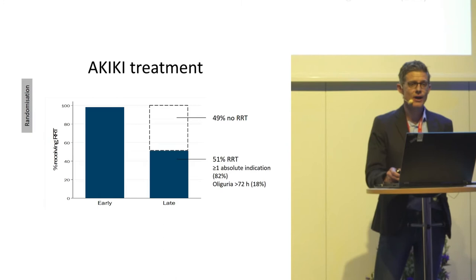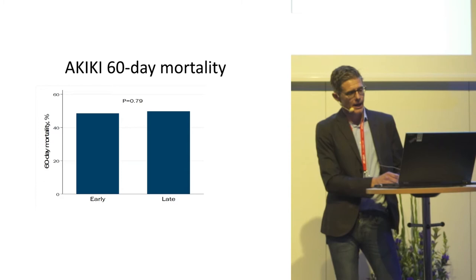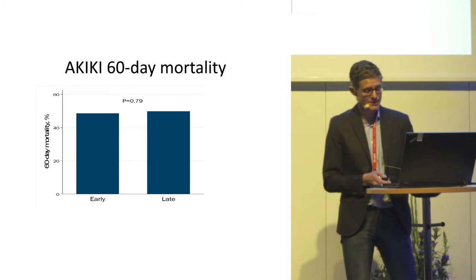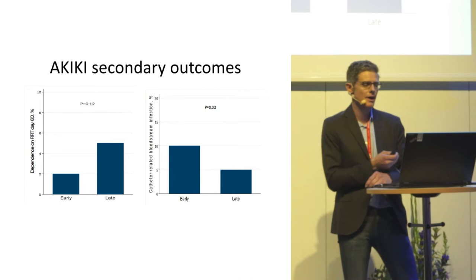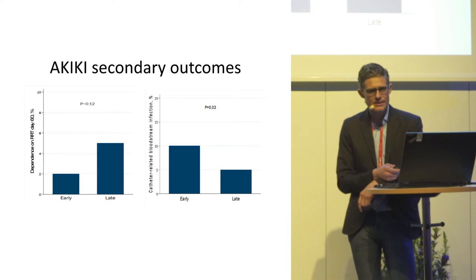The median time from randomization to RRT start was two hours in the early group and 57 hours in the delayed group. The primary outcome was 60-day mortality. According to this study, there doesn't seem to be any benefit to starting RRT early — mortality was slightly below 50% with no statistically significant difference between groups. RRT dependence at day 60 was low in both groups, though the incidence of catheter-related bloodstream infections was twice as high in the early group.